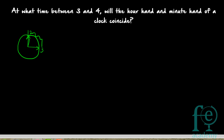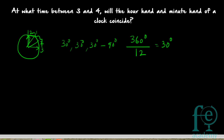Between 12 and 1 there are 30 degrees, between 1 and 2 there are 30 degrees, and between 2 and 3 there are 30 degrees — so in total it is 90 degrees. Each section represents 30 degrees, because the whole clock is 360 degrees divided into 12 hours: 360 ÷ 12 = 30 degrees per hour.